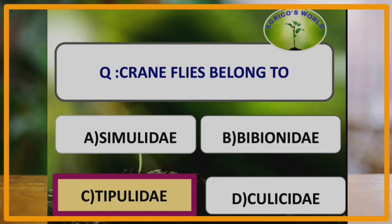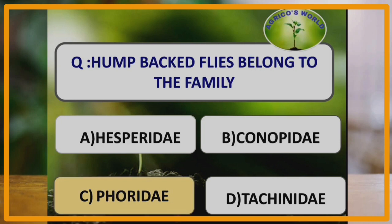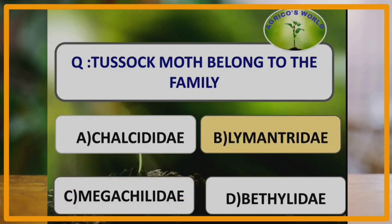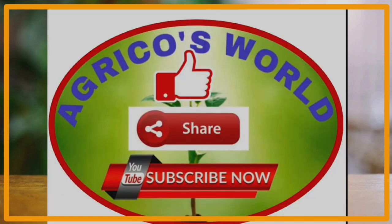Crane flies belong to the family Tipulidae. Robber flies belong to the family Asilidae. Humpbacked flies belong to the family Phoridae. Tussock moths belong to the family Lymantriidae, which is a moth family belonging to the order Lepidoptera.